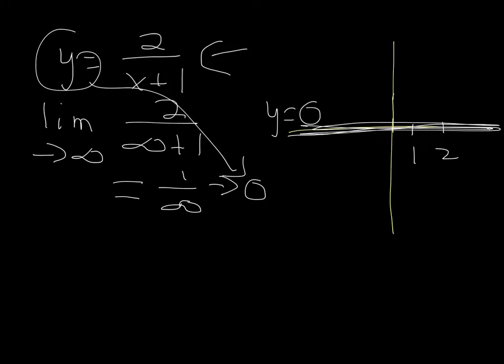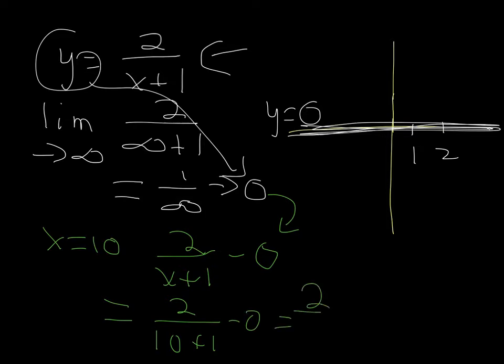And so, what we do is we'll say, you know, let's choose a value like x equals 10. That's a big enough x to be a large value. So, at x equals 10, the function minus the asymptote, so 2 over x plus 1 minus the asymptote, which is 0. And I know that seems silly, but if the asymptote is something other than 0, that's really important. So if you had gotten 1 or something, you would put a 1 there, and it makes a difference. If I put 2 over 10 plus 1 minus 0, I get 2 over 11, and that's a positive number.